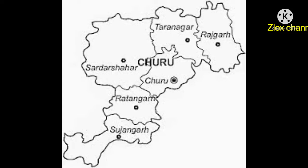Fourth, Sardar Shahar has 185 villages, population 3,82,474, and area 3,832 km². Fifth, Sujangarh has 167 villages, population 4,80,039, and area 2,689 km². Sixth, Taranagar has 124 villages, population 2,11,831, and area 1,805 km².